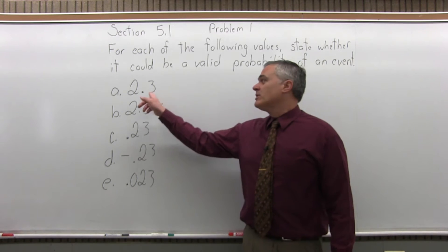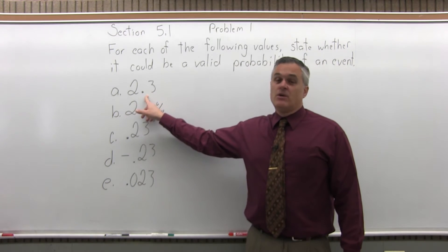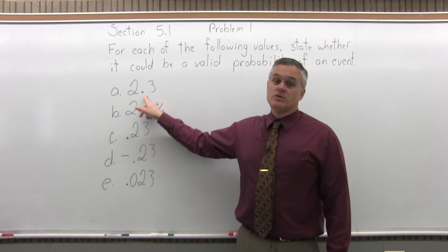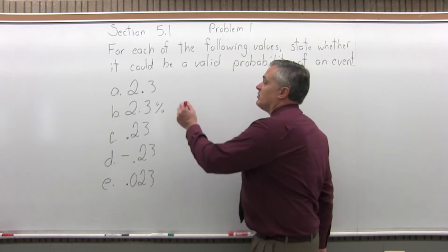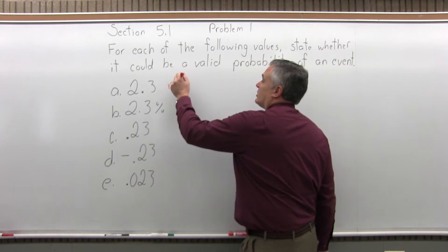Part A, we have a probability of 2.3. Probability must be between 0 and 1, so 2.3 is too big. Your probability can never be more than 1, so that's not valid.